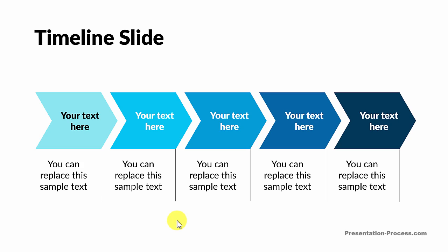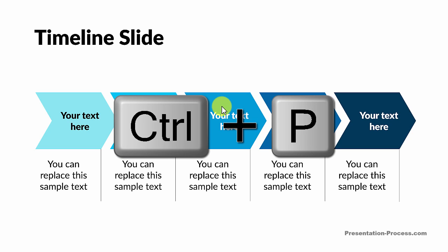Did you know that you can draw on your slide in the slideshow mode using nothing but your mouse? Now watch the cursor as it moves on the screen. I'm going to press CTRL-P, which is the shortcut to convert your mouse cursor into a pen in the slideshow mode.